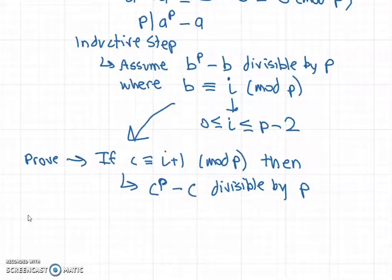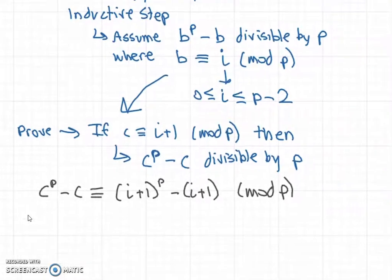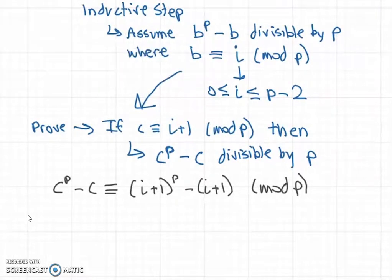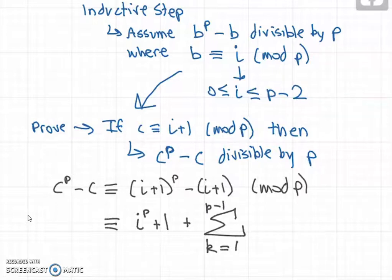So c^p minus c is congruent to (i+1)^p minus (i+1) mod p. Now we can do binomial expansion of (i+1) to the power of p—this is where the lemma will come in. We have i^p plus 1, but we're also adding the sum from k equals 1 to p minus 1 of p choose k times i^k. Then we subtract i+1.